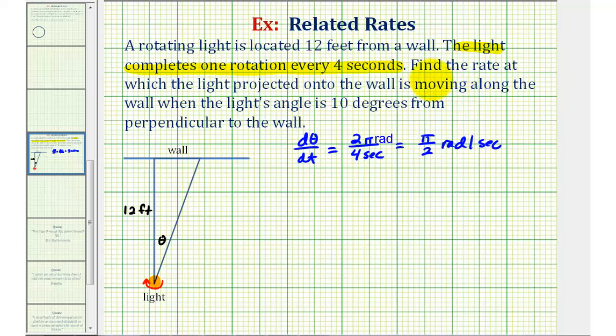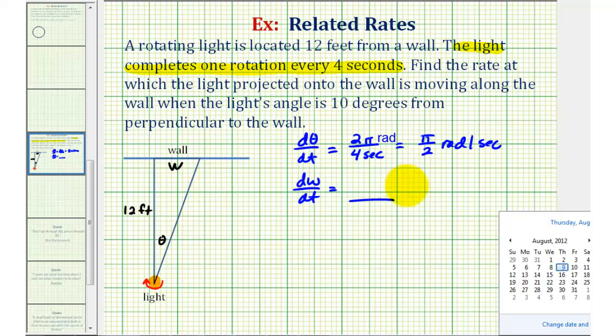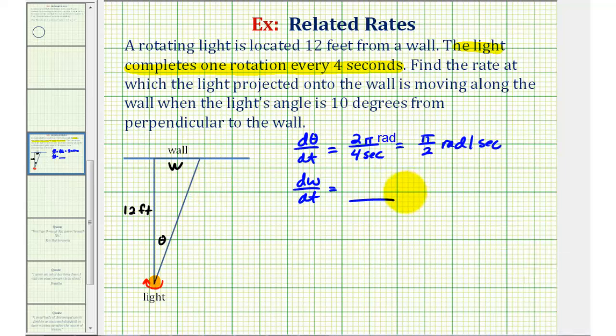Next, we're trying to find the rate at which the light projected onto the wall is moving along the wall. So if we label the length of this segment here w, we actually want to find dw dt, which will be feet per second. We want to find this rate of change when our angle theta is equal to 10 degrees.